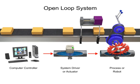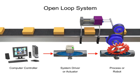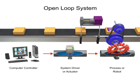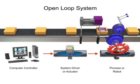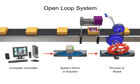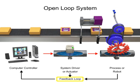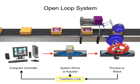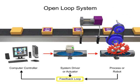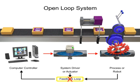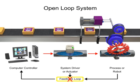In an open-loop system, the signals that go from the computer to the system driver to the robot are never checked with a feedback loop to ensure that the robot has completed its task.